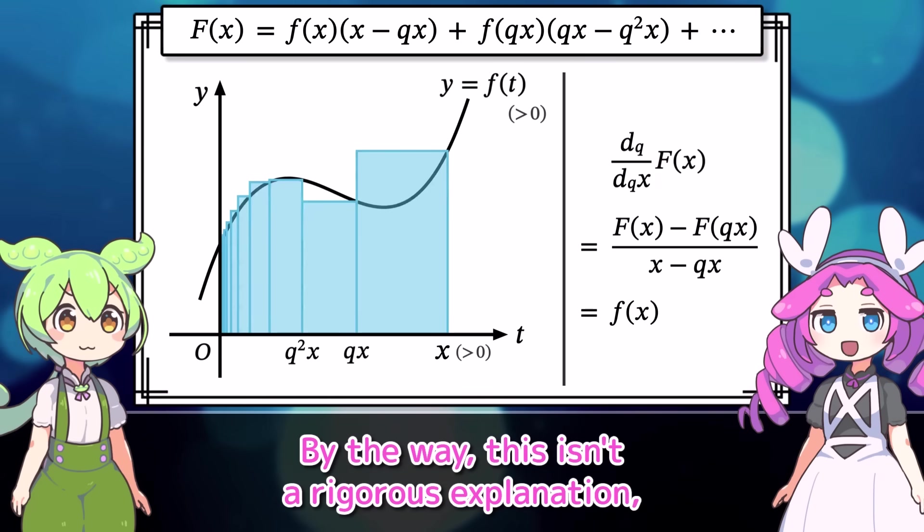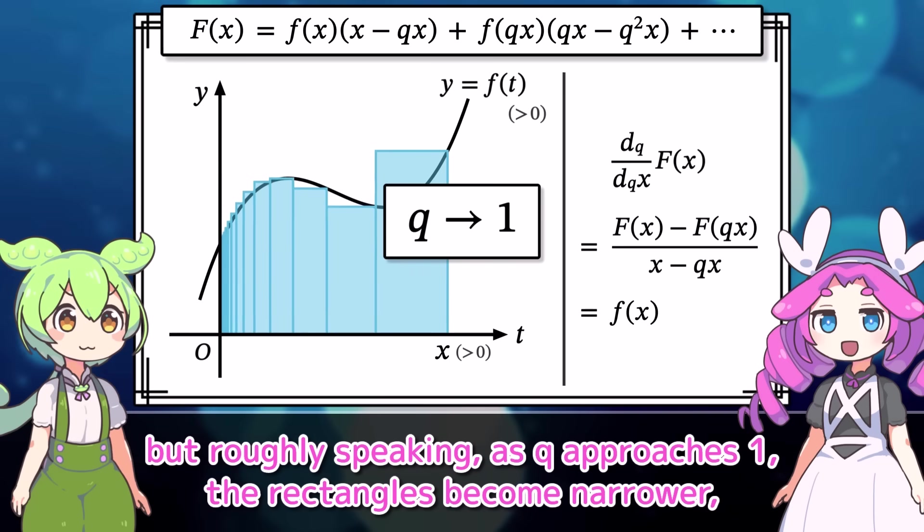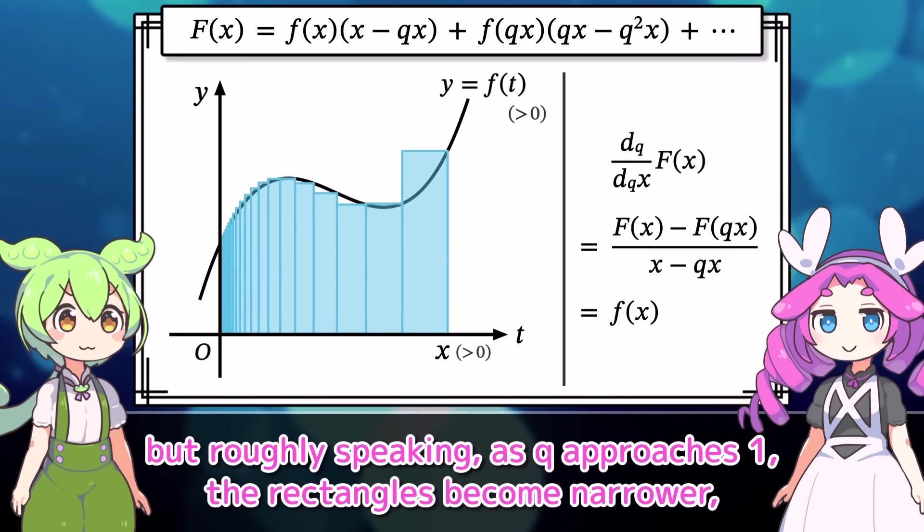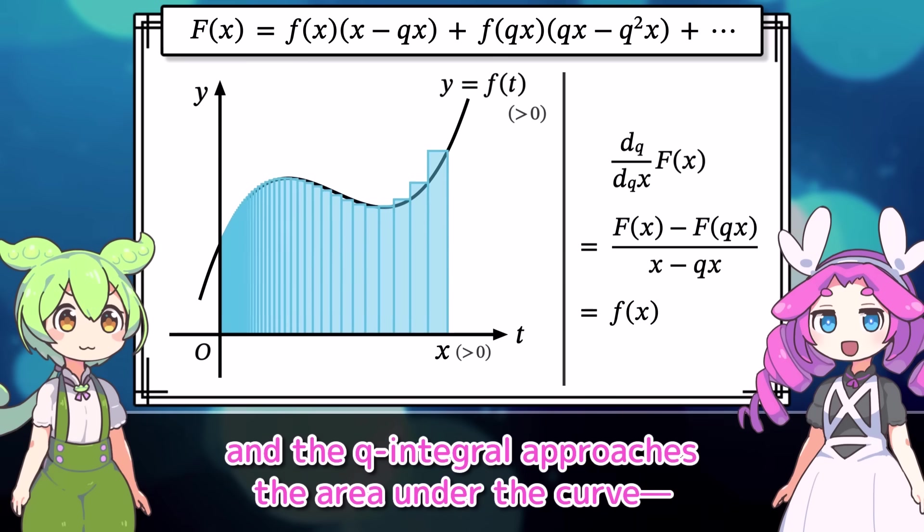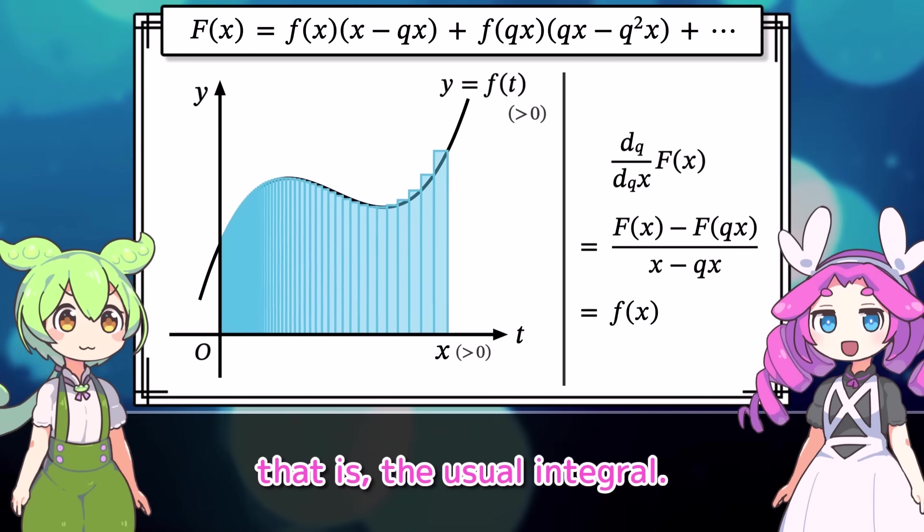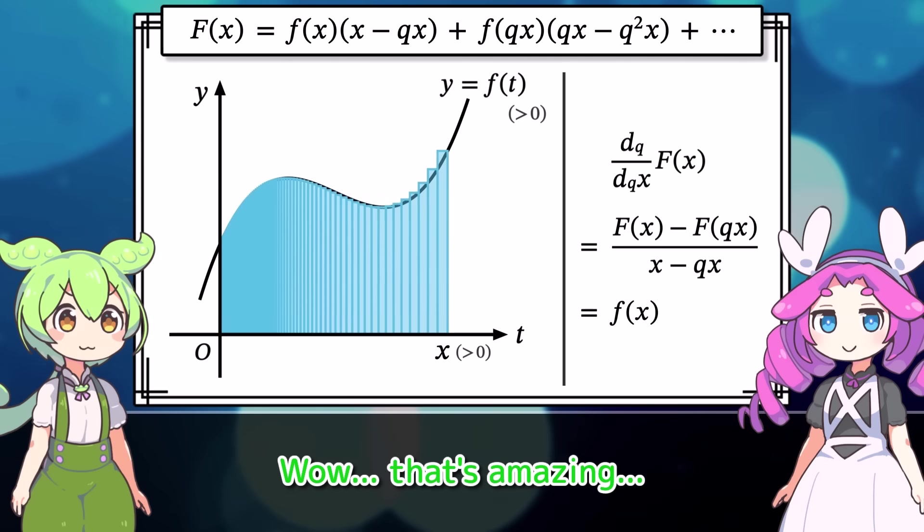By the way, this isn't a rigorous explanation, but roughly speaking, as q approaches 1, the rectangles become narrower, and the q integral approaches the area under the curve. That is, the usual integral. Wow! That's amazing!